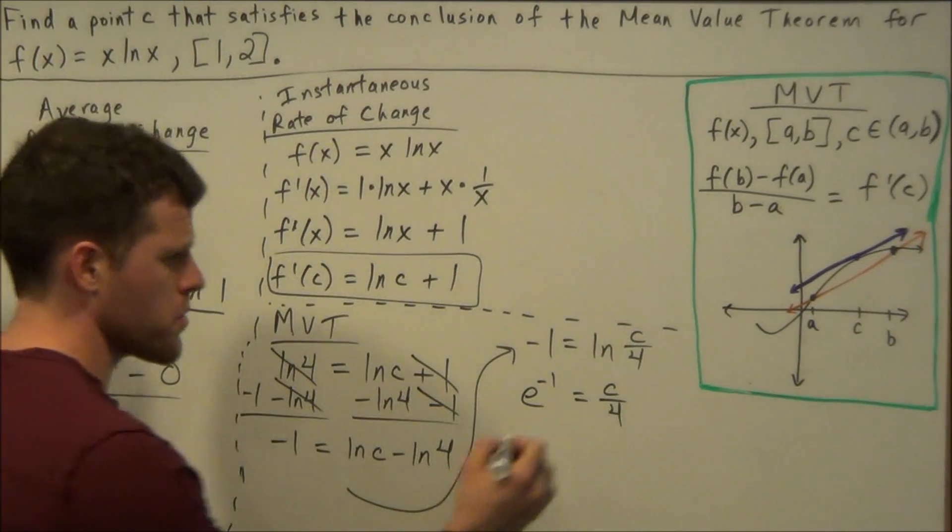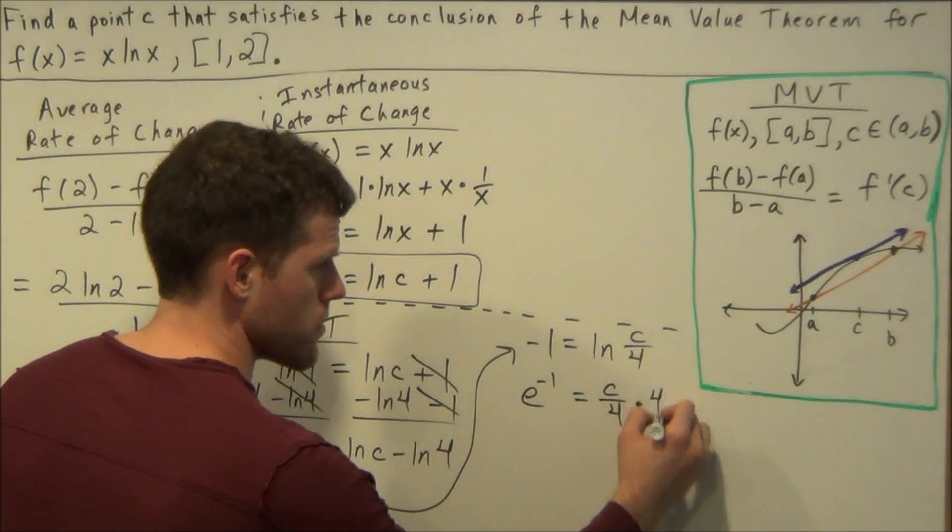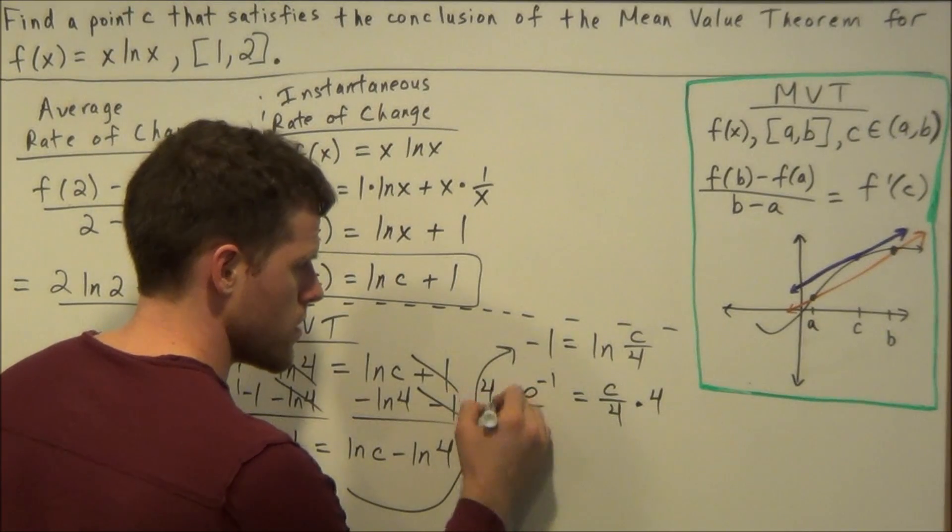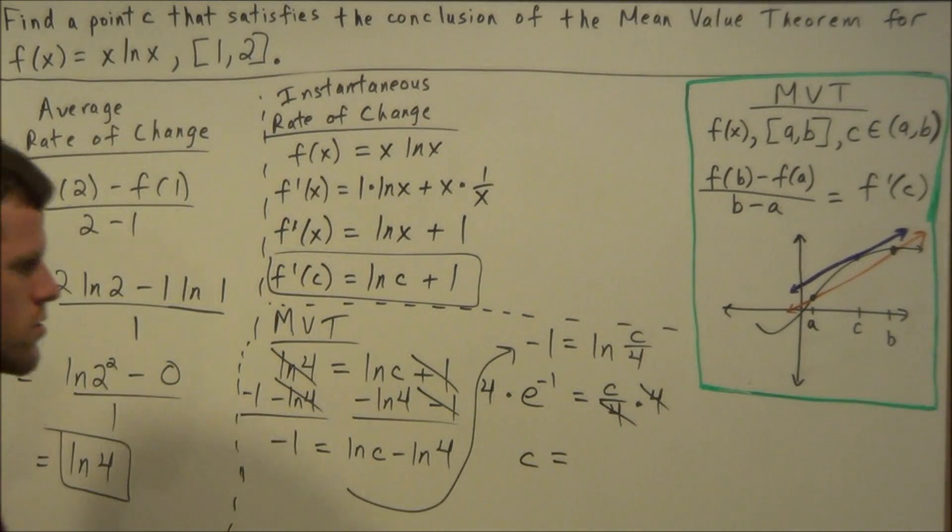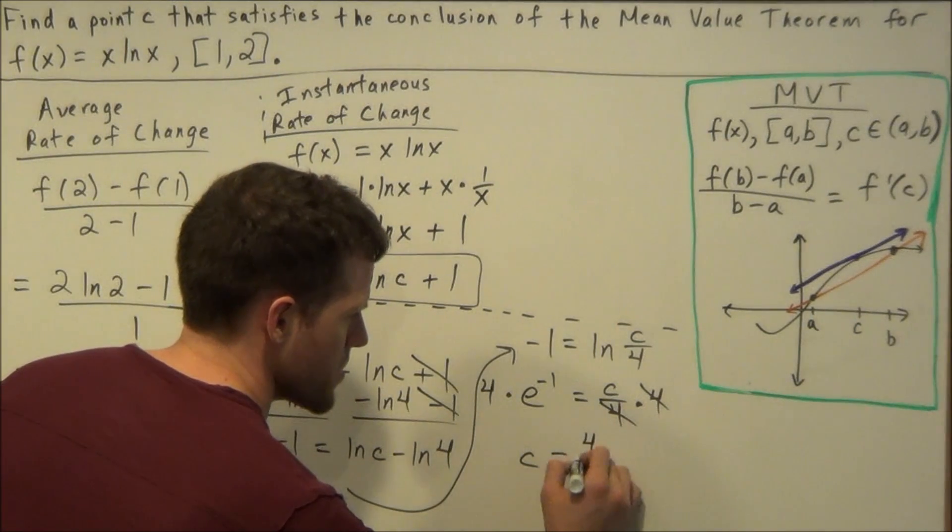So then to solve for c, all we have to do is multiply both sides by 4. This will cancel, and c is equal to 4 times e to the negative 1, or we could simply write this as 4 over e.